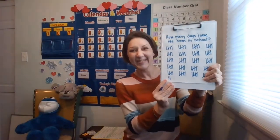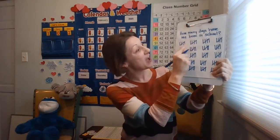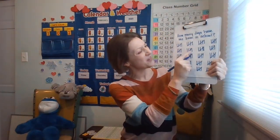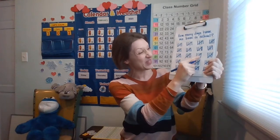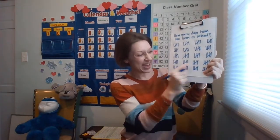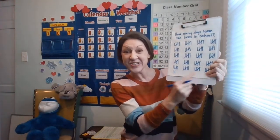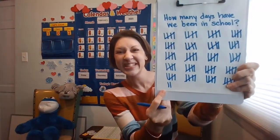How many days have we been in school? Counting by fives: 5, 10, 15, 20, 25, 30, 35, 40, 45, 50, 55, 60, 65, 70, 75, 80, 85, 90, 100, 101, 102.